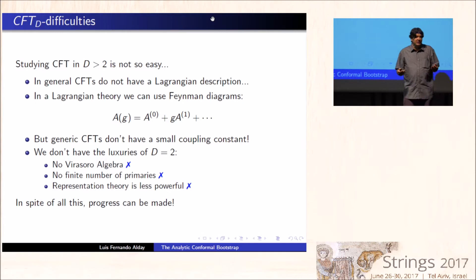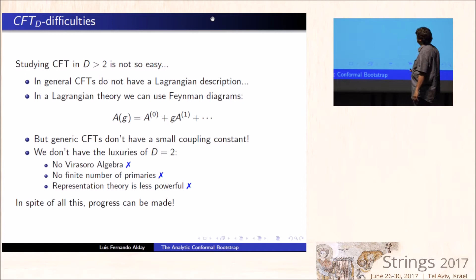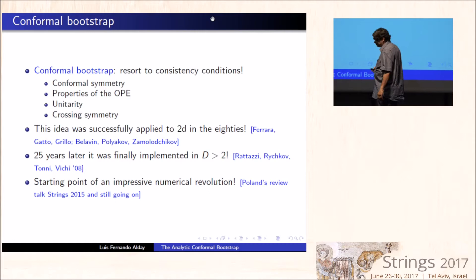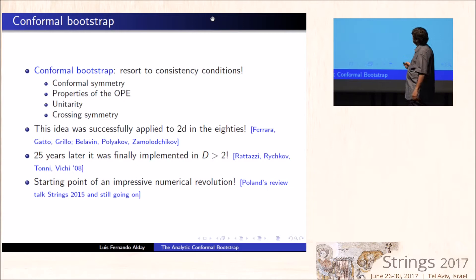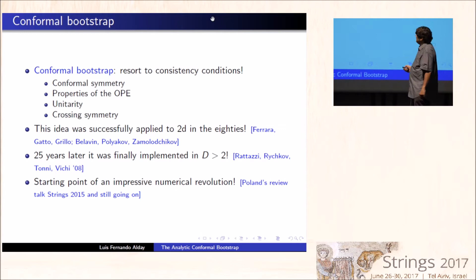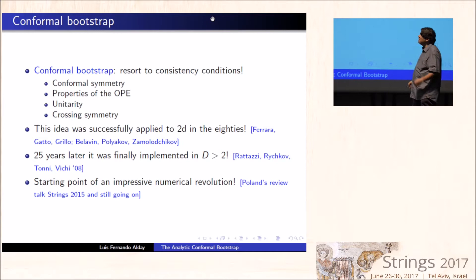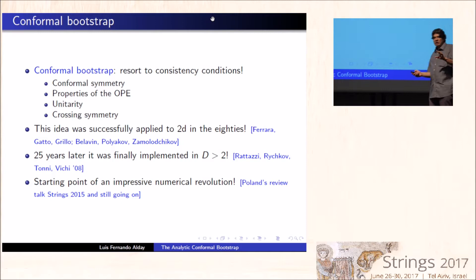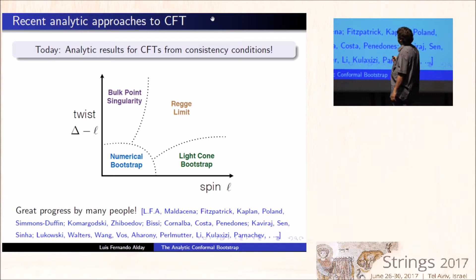In spite of all this, progress can still be made. One of the ideas that allows us to make progress is the idea of the conformal bootstrap. The conformal bootstrap consists in resorting to consistency conditions — since we don't have a Lagrangian, we use what we can. The idea is to use consistency conditions such as conformal symmetry, properties of the OPE, unitarity, and crossing symmetry. This idea was very successfully applied to two dimensions in the 80s, and 25 years later it was successfully implemented in higher dimensions, starting an impressive numerical revolution which is still going on.